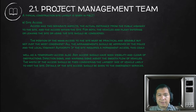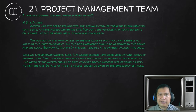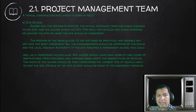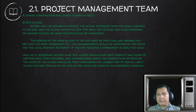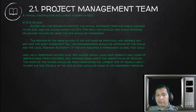When you say site access, it has two separate aspects: the actual entrance from the public highway to the site, and the access within the site. The position of the main access must be practical and sensible. All arrangements should be approved by the police and the local highway authority if the site requires permanent access. Any access should have good visibility, clear of obstructions, with direction signs and warnings to assist the smooth flow of vehicles. When planning your site access, you must make sure it is sufficient for the biggest type of machinery you plan to use — for example, if you're going to use a site excavator or a full-size dump truck, you must already consider their size.